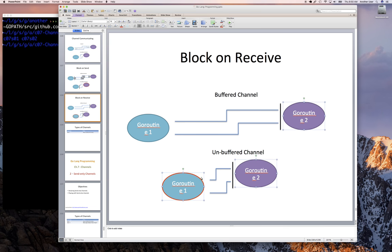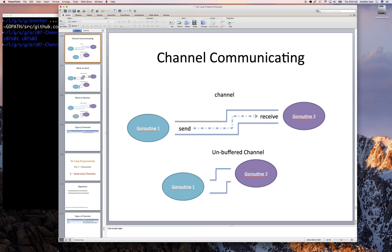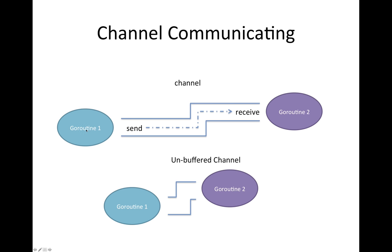Alright, so we have goroutine1 and goroutine2. They run by themselves, isolated, and don't have anything to do with each other. But they still need to store and share information. By creating a channel, we can have one goroutine send information to the next goroutine, and that other goroutine would receive it — goroutine1 sends, goroutine2 receives.